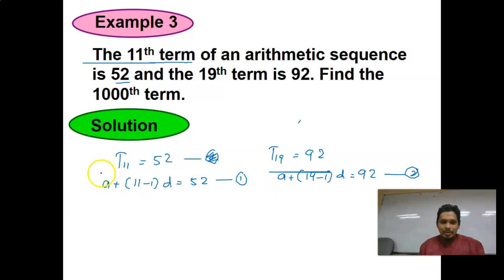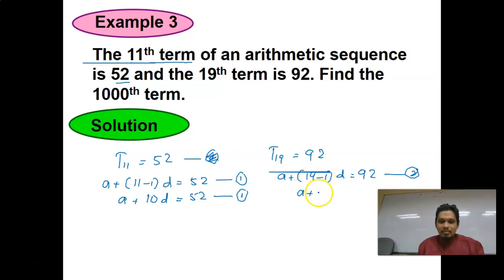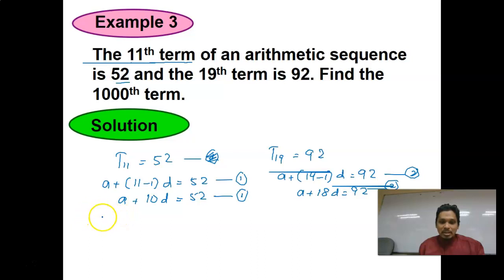The 11th term gives us A + (11−1)D = 52, so A + 10D = 52 (Equation 1). The 19th term gives A + (19−1)D = 92, so A + 18D = 92 (Equation 2). From these two equations we can form a simultaneous equation to find A and D.